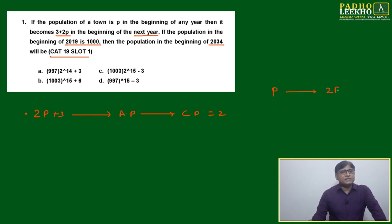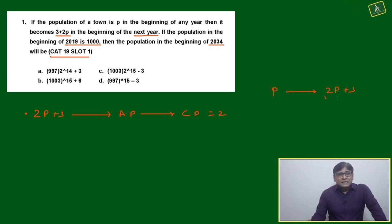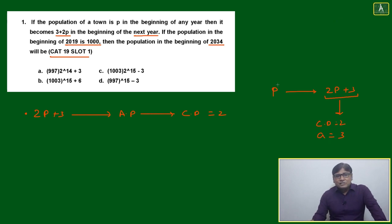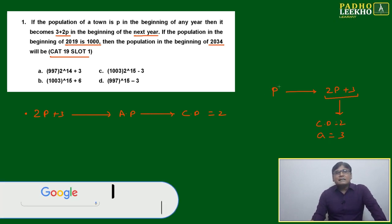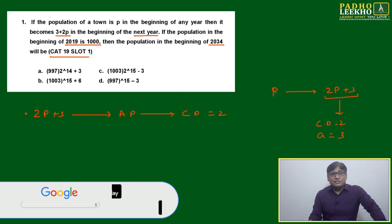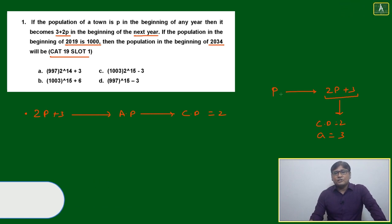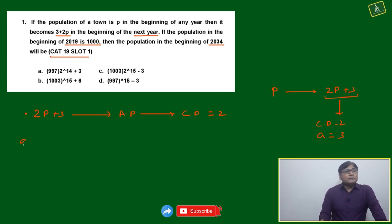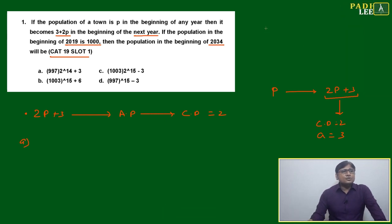The only problem is if you are starting with P and it is changing to 2P plus 3, your calculation of 3 will matter. Looking at this equation 2P plus 3, common difference equals 2 and first term equals 3 might come to mind, but the first term depends on the previous term P. Based on this you might get some confusion, but that can be handled.